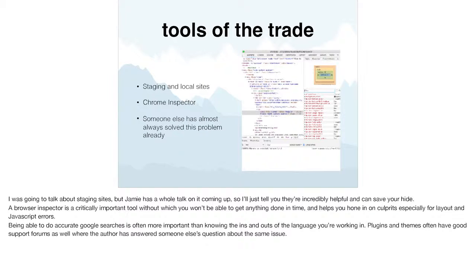A browser inspector is absolutely critically important, and if you're not using a browser inspector like Chrome inspector to debug things — especially CSS — you won't be able to get anything done in any kind of reasonable time. It helps you hone in on all the culprits. Someone else has almost always already solved the problem you're dealing with, so being able to do an accurate Google search is often way more important than actually knowing the details of the language you're working in. Plugins and themes often have good support forums where the author has answered somebody else's question about the same issue.